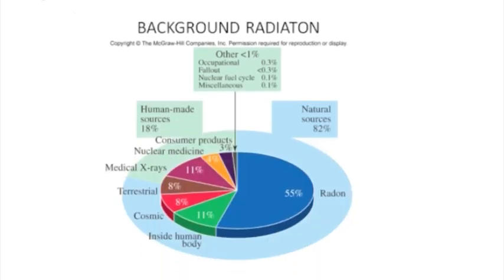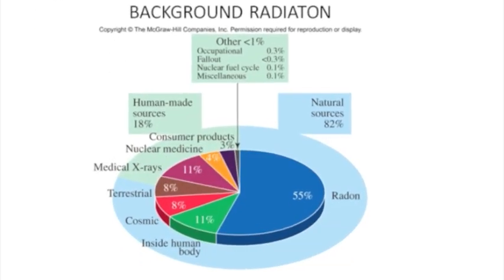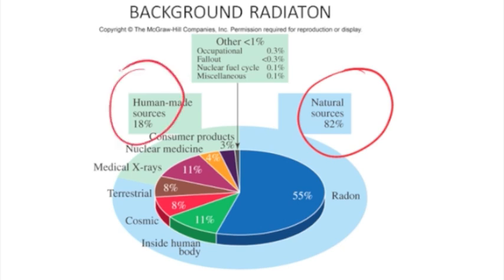Now, there is a certain amount of background radiation all the time. You're never not ever exposed to background radiation. Most of the background radiation, 82%, just comes from natural sources, whereas only 18% comes from human-made sources. And the largest source for background radiation is radon.